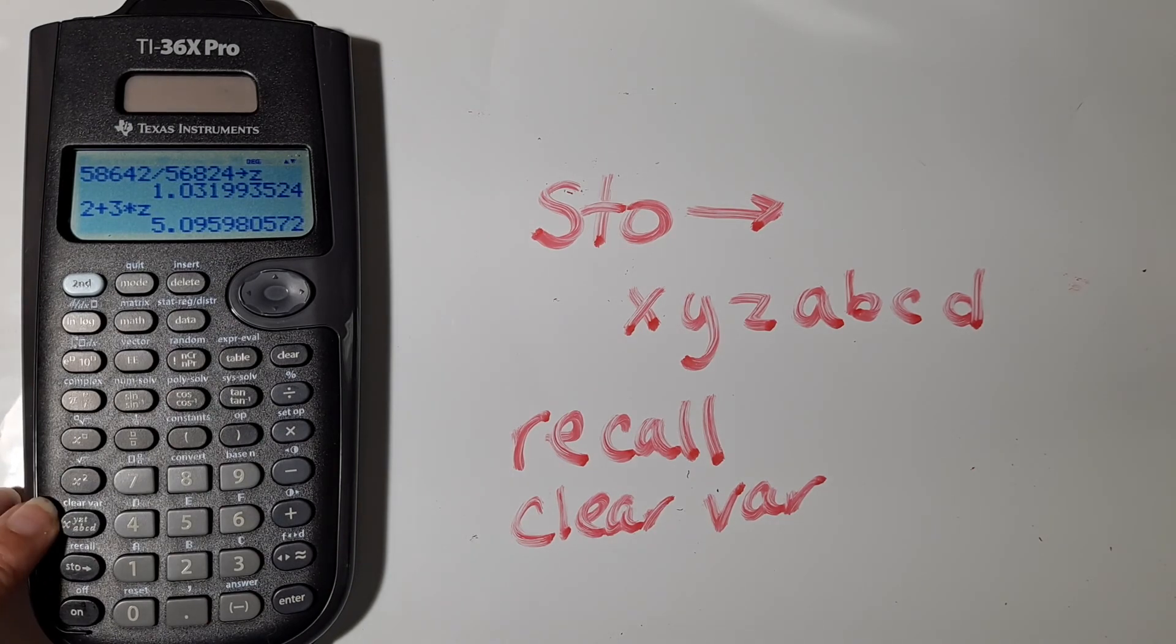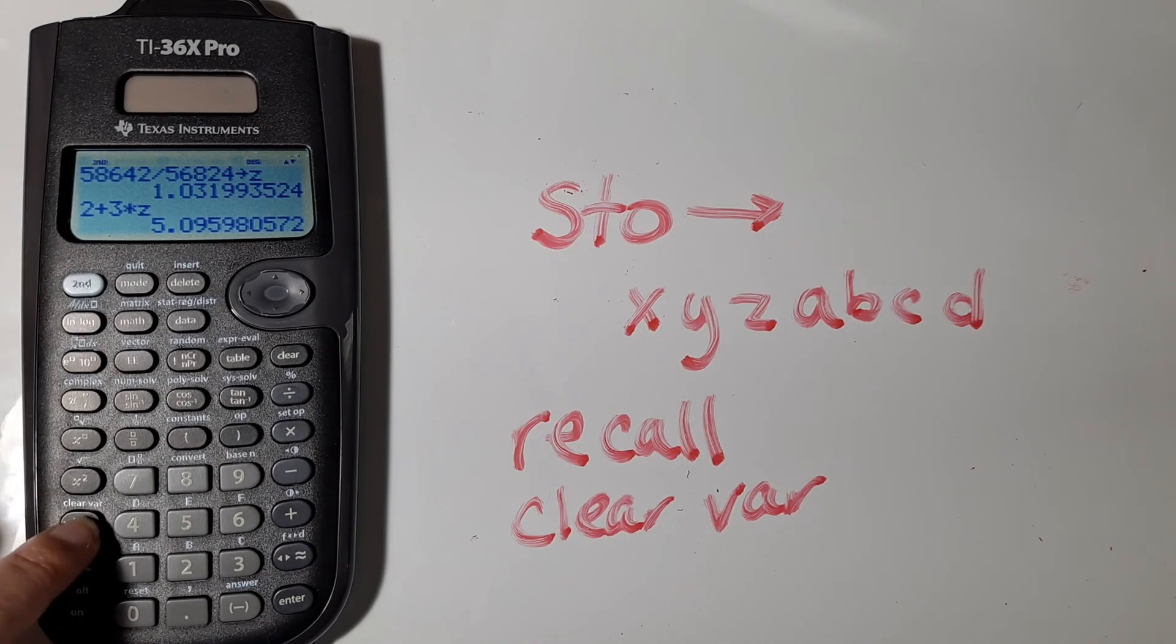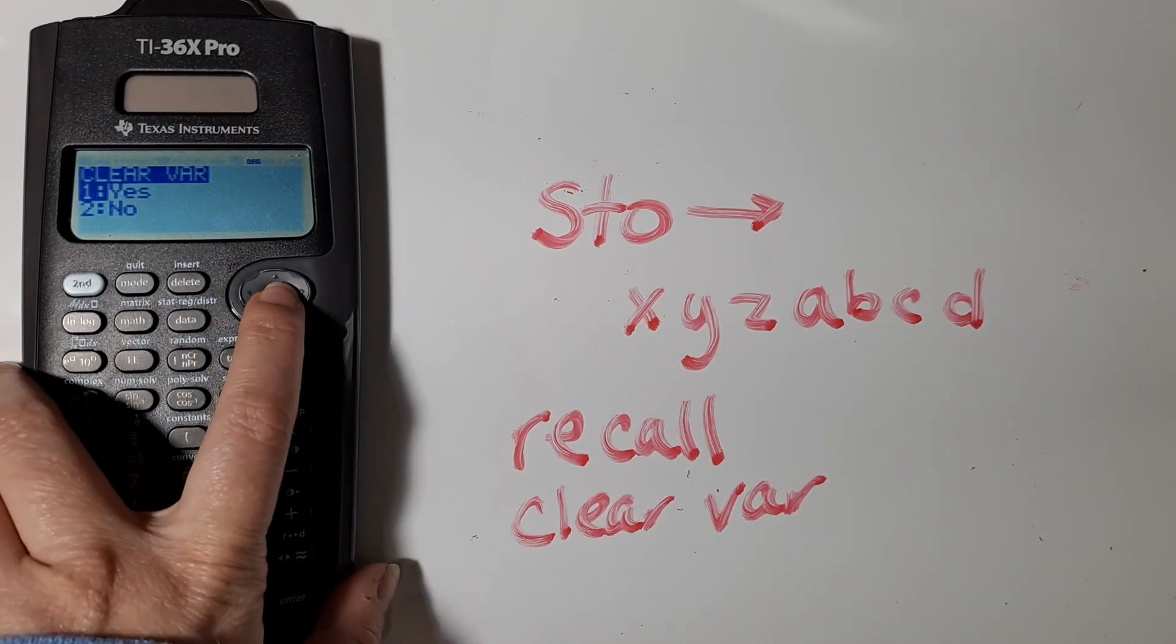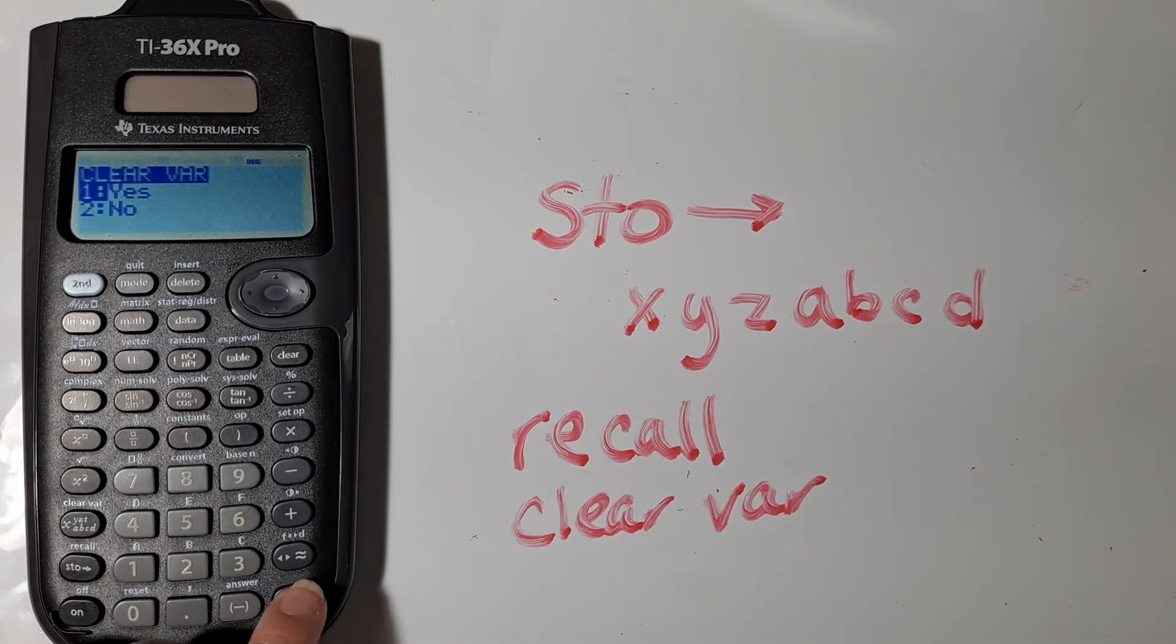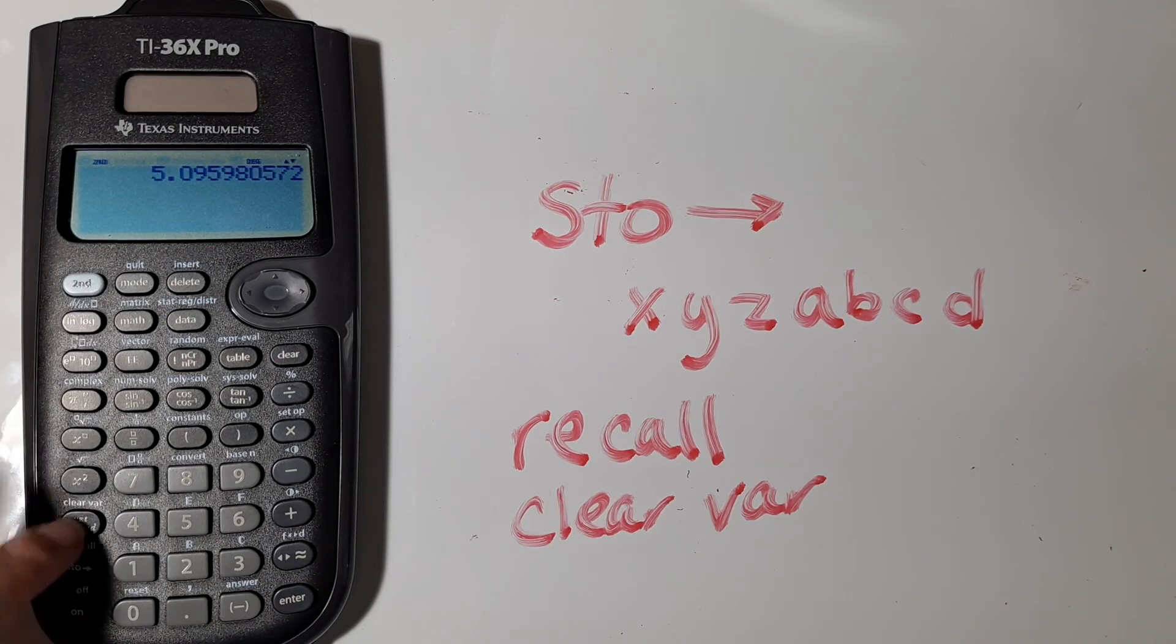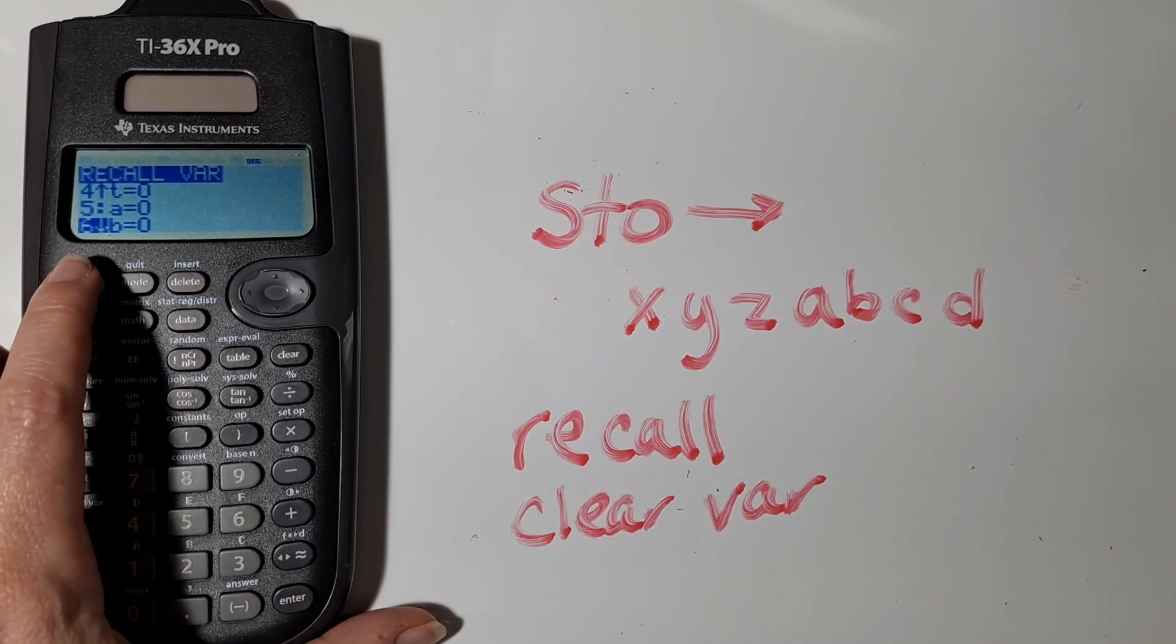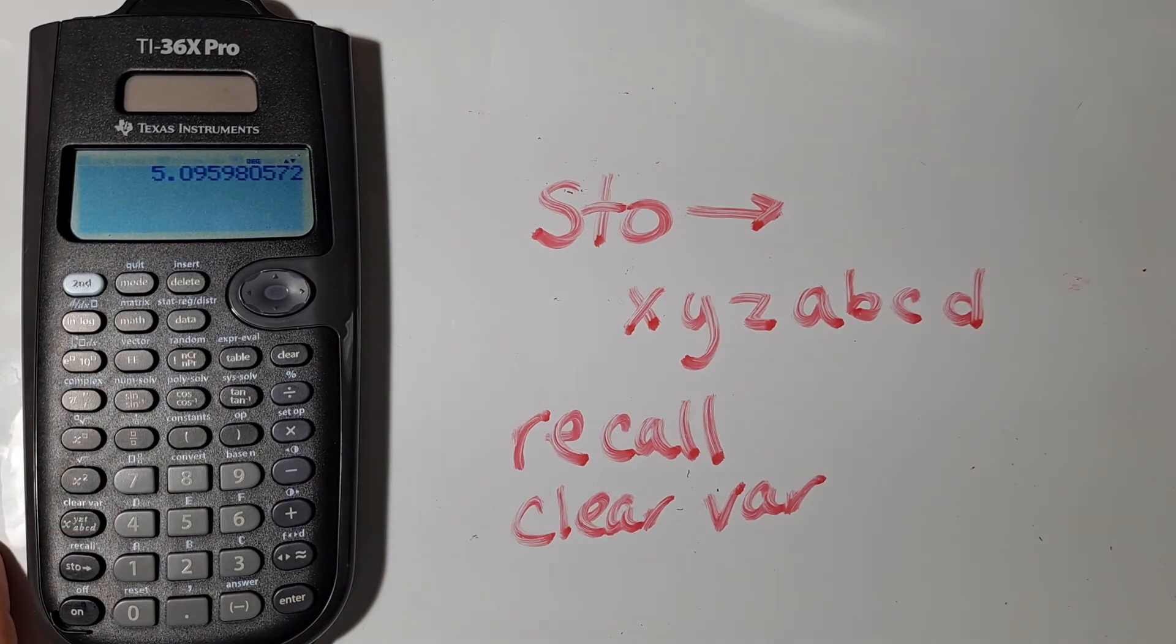And then if you want to delete all of those stored variables, you can hit second and then XYZ. And that brings up the clear variable menu. And I'm going to go ahead and clear all of my stored values. And so now when I go back to recall, you can see all of them are zeros. Hope that helps you.